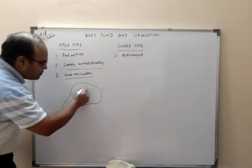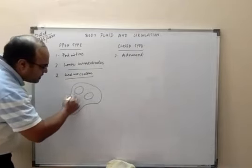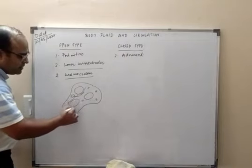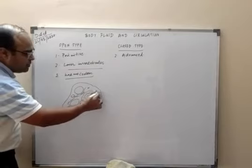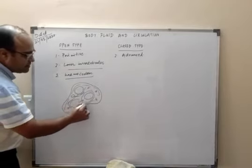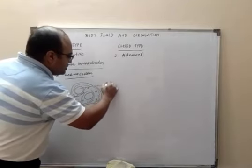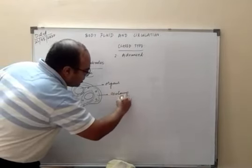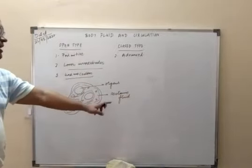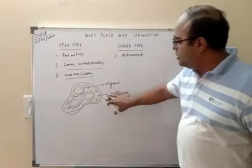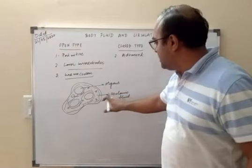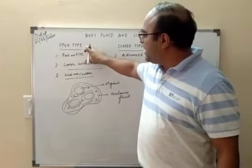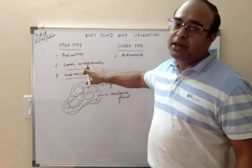I will draw a diagram and show you. These are the organs, and the haemocoelome is all around them. This is the fluid which fills the coelomic cavity. These organs are directly in contact with the haemocoelome or the coelomic fluid, and gaseous exchange directly takes place through them.